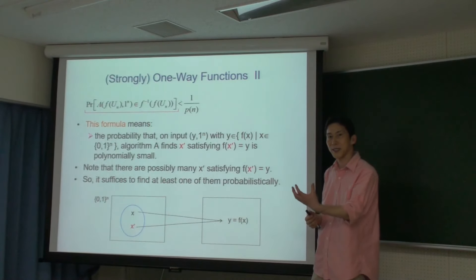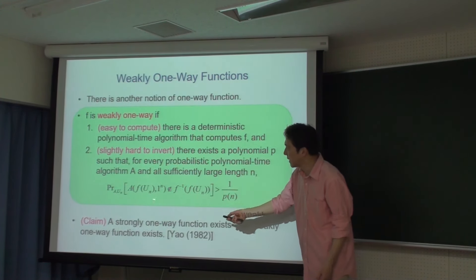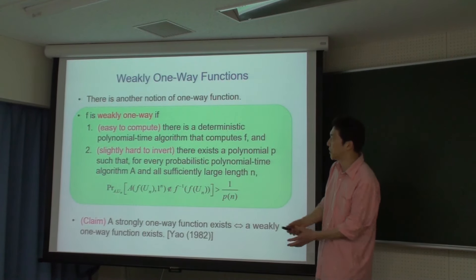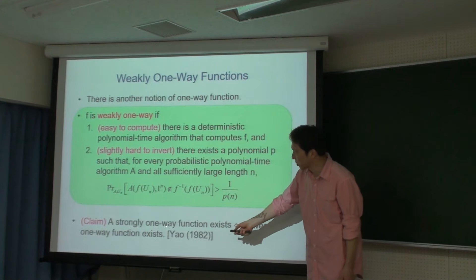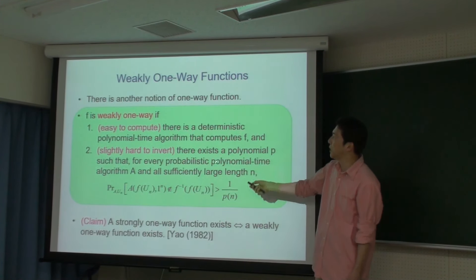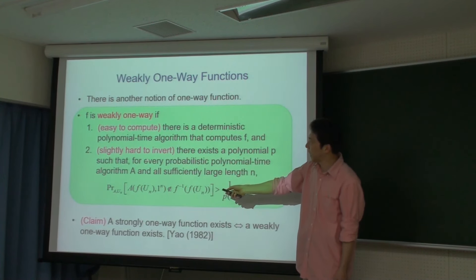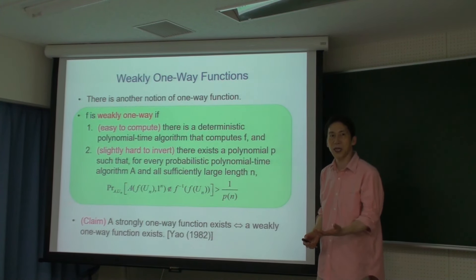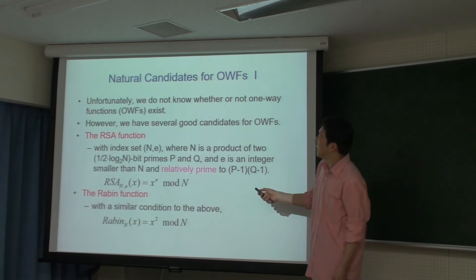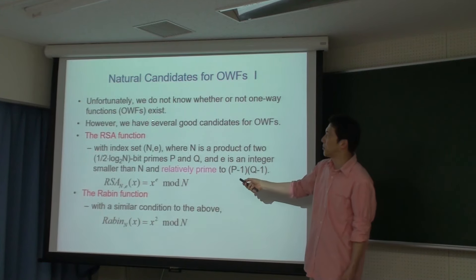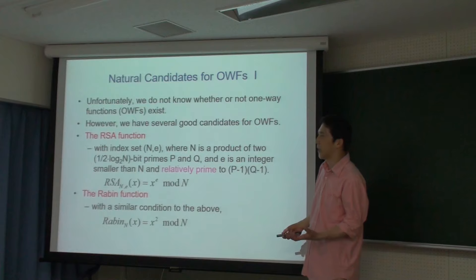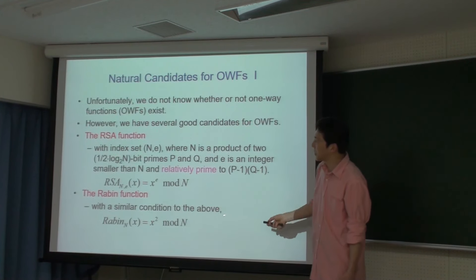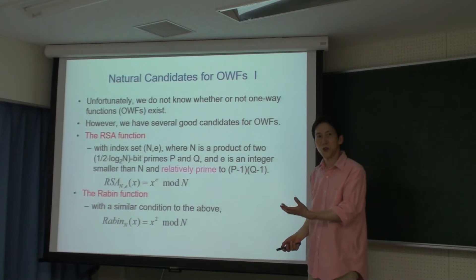これは失敗する確率が少しあるということで、こちらの条件は弱いです。しかしYaoが証明したのは、先ほどの定義とウィークにした定義が同値になっているということで、どちらの定義を使っても構わないと証明しています。実際にOWFが存在するかどうかは未だに未解決問題で、1980年代から来ている大きな問題ですが、ワンウェイファンクションかもしれないと思われている関数がいくつか実用化されています。